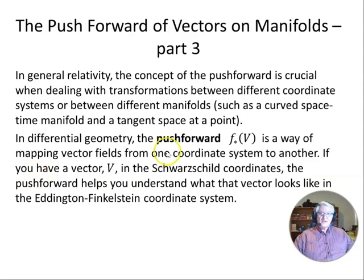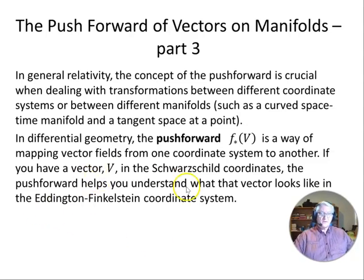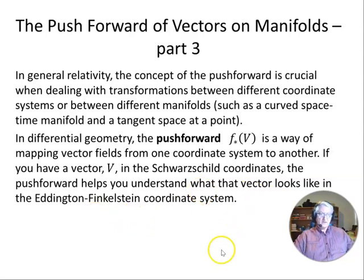In differential geometry, the push forward f★ of v is a way of mapping vector fields from one coordinate system to another. If you have a vector v in the Schwarzschild coordinates, the push forward helps us understand what that vector looks like in the Eddington-Finkelstein system.